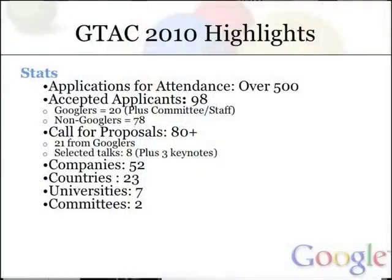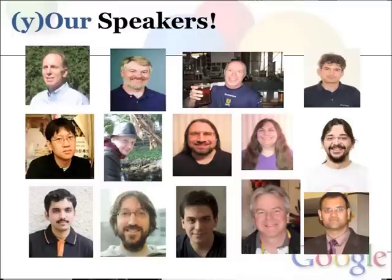There are 52 companies represented and 23 countries — that's the best we can guess based on passport information. We might be off a bit. Seven universities are represented, either as students or faculty. Two committees: the planning committee and the logistics committee. And one GTAC. There are other speakers as well — you'll be introduced to them as we go through today and tomorrow. A very happy set of speakers — they are all here, they've all made it. We met up with them last night and everybody was high on energy and looking forward to presenting their thoughts to this forum. Welcome every one of you, and we hope you have a great GTAC over the next two days.